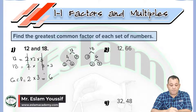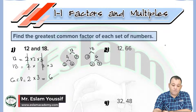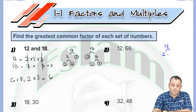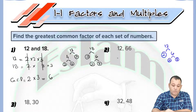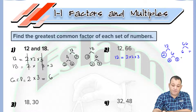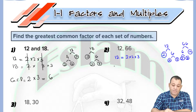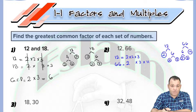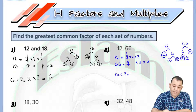For question number 2, by the same way, we have 12 and 66. For 12, we have 2 times 2 times 3. For 66: 66 equals 6 multiplied by 11. Since 11 is a prime number and 6 equals 2 times 3, we have 66 equals 2 times 3 times 11. The greatest common factor will be 2 multiplied by 3, which equals 6.